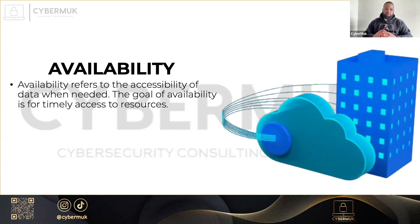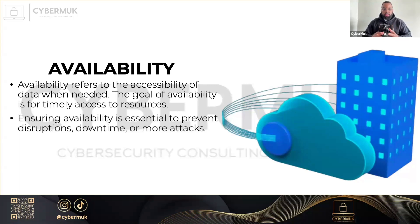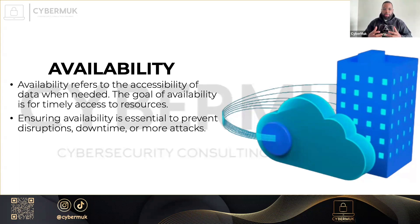The third component of the CIA Triad is Availability. Availability refers to the accessibility of data when needed. The goal is timely access to resources, and it's essential to prevent disruptions or downtime. Why is availability important? When you type amazon.com, cnn.com, or espn.com into your web browser, those websites are always up and running because they have multiple servers, so if one goes down, another is ready to take over.